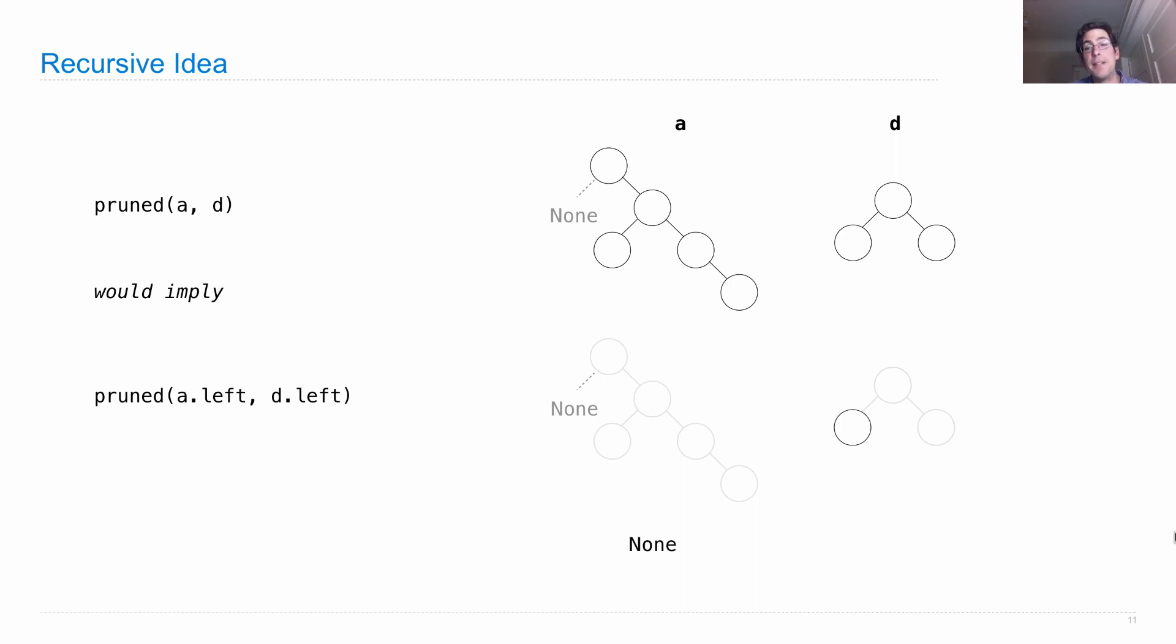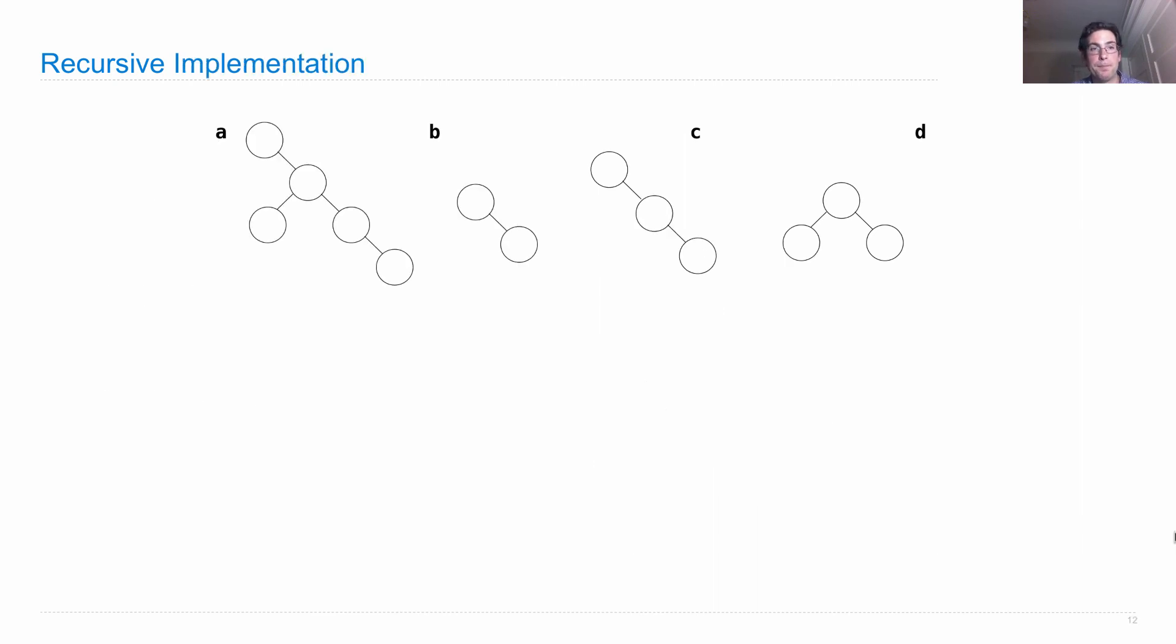So when we compare none to something that's not none, then we know that the second element is not a pruned version of the first. And we're going to write a function where the recursive calls are pruned versions, and the base case is that one or more trees is none.